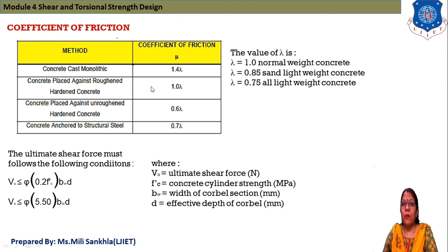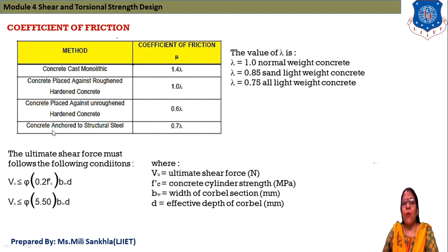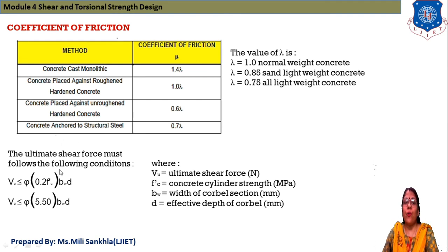Different values of the coefficient of friction mu are given in a table. For concrete cast monolithically, μ = 1.4λ. For concrete placed against roughened hardened concrete, μ = 1.0λ. For concrete placed against unroughened hardened concrete, μ = 0.6λ. For concrete anchored to structural steel, μ = 0.7λ. Here λ = 1.0 for normal weight concrete, λ = 0.85 for sand lightweight concrete, and λ = 0.75 for all lightweight concrete.